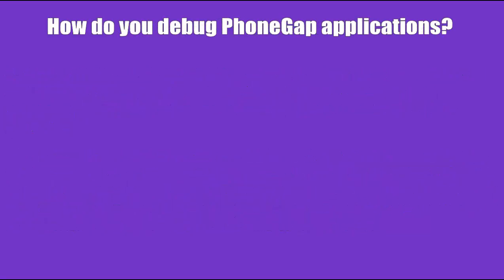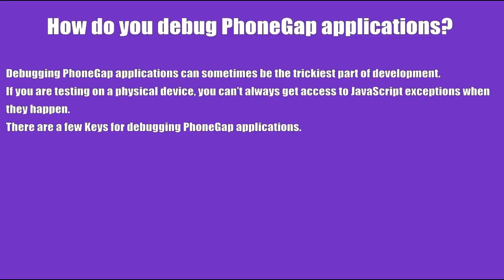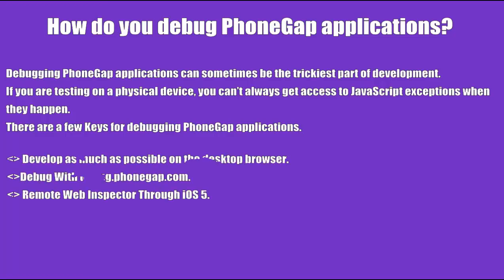How do you debug FongApe applications? Debugging FongApe applications can sometimes be the trickiest part of development. If you are testing on a physical device, you can't always get access to JavaScript exceptions when they happen. There are a few keys for debugging FongApe applications: develop as much as possible on the desktop browser, debug with bug.fongape.com, and use Remote Web Inspector through iOS 5.